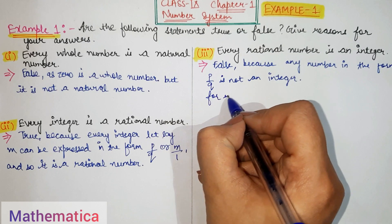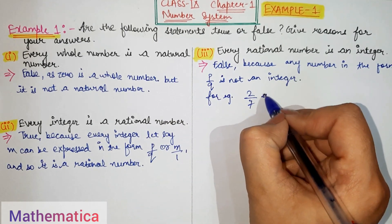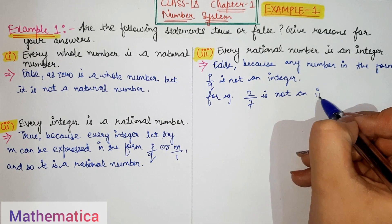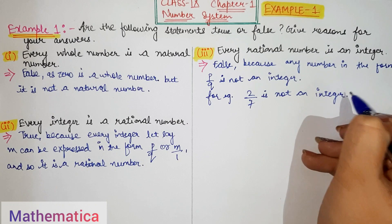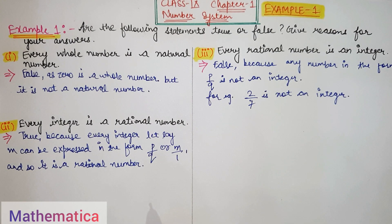For example 2 by 7 is not an integer. But every integer is a rational number. We have studied this before. Clear?